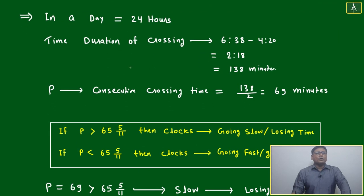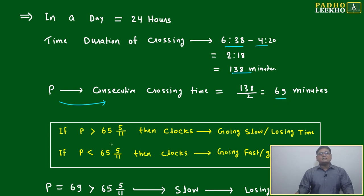In a day, 24 hours. Time duration of crossing: this is 2 hours 18 minutes, 138 minutes. Then, consecutive crossing time will be 138 ÷ 2 = 69 minutes. Of course, 69 is more than 65 × 5/11.